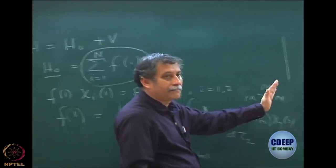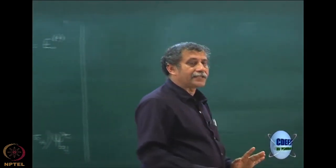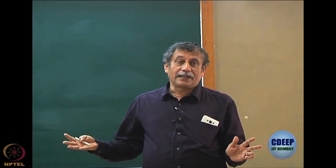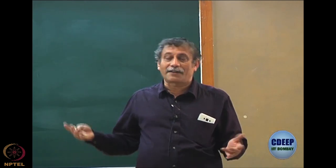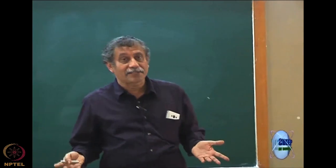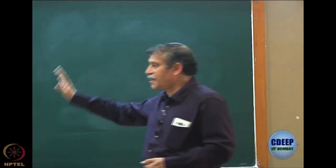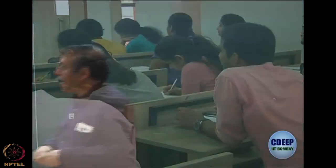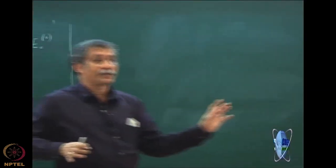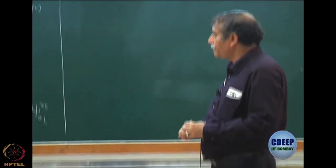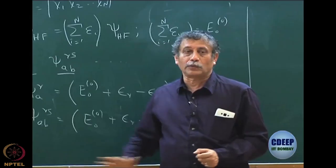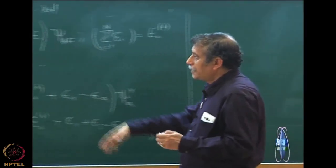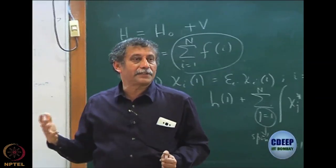I can keep increasing M to get more and more solutions. In principle, in that basis all solutions are known. Remember, in quantum chemistry everything we do is in a basis — there is nothing called exact Hartree-Fock; even Hartree-Fock is in a basis. Whatever we are going to discuss — MP2, CI, coupled cluster — everything will be defined in a basis. When M tends to infinity, everything will reach its exact limit. The number of determinants is M-choose-N, which are already known, so I can start my perturbation theory.